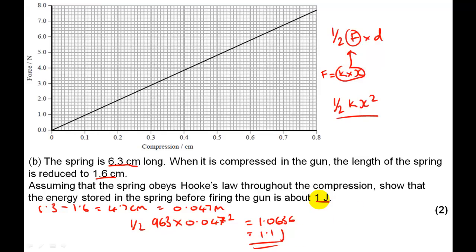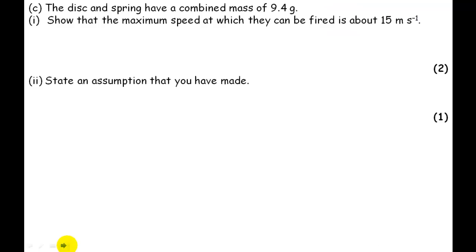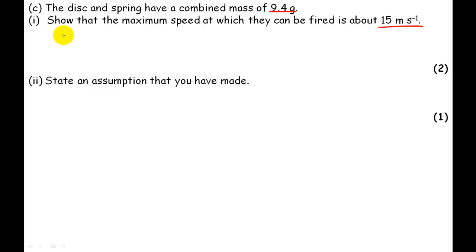The next question tells us the expected answer so you can continue even if you got stuck. We're given the mass of the projectile — the disc and spring together — and need to find the speed given the energy. Since the available energy equals the kinetic energy of the projectile, 1.1 joules equals ½mv².